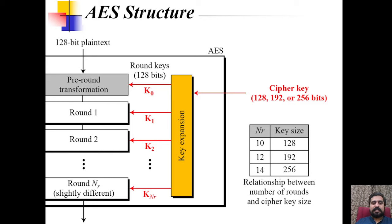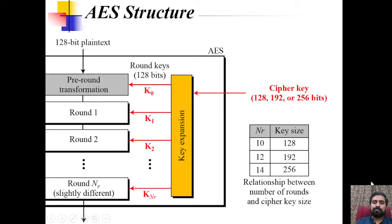Here is the basic structure of the AES algorithm. AES is defined in three variants, with 10, 12, and 14 rounds respectively. If we use the 128-bit AES algorithm, we choose a 128-bit key size and 10 rounds. If we use 192-bit AES, we use 12 rounds, and if we use the 256-bit AES variant, we use 14 rounds.